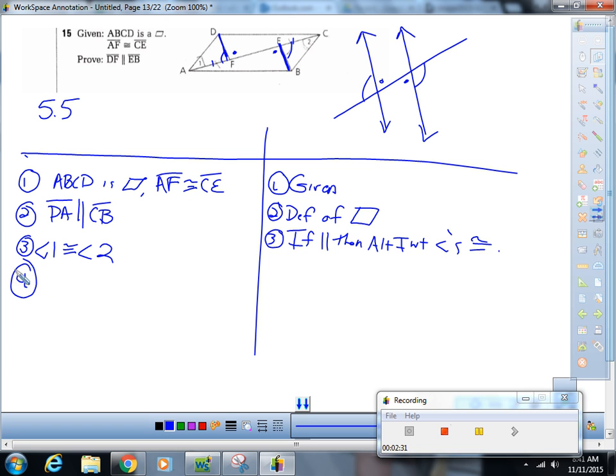Where am I going next, class? I got one more step. DA is congruent to CB. What's my reason?